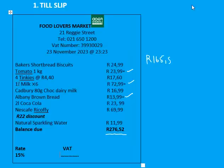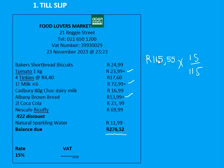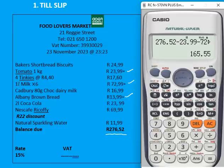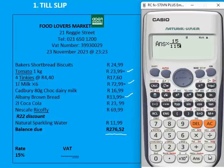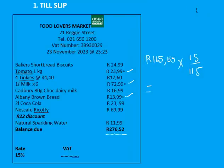After subtracting the VAT-exempt items, the total we will use to calculate VAT is R165.55. We multiply this total by 15/115 — not 15/100 — because when you buy items at a store, VAT is already included. See my finance video if you haven't done so already. So if you take R165.55 and multiply it by 15/115, you get your VAT: R21.59.